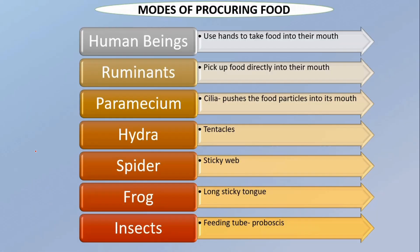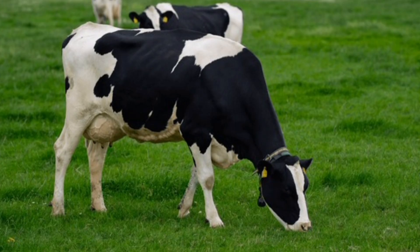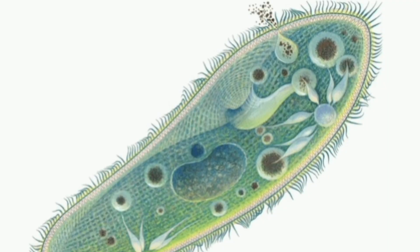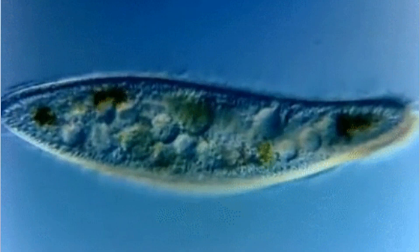Next is the mode of procuring food. Procuring food means the way we are ingesting the food. The mode of procuring food into a body varies in different organisms, each having special structures to procure food. Human beings use their hands to take food into the mouth. Ruminants, like cows and horses, pick up food directly into their mouth. Paramecium has fine hair-like structures called cilia all over its body, which push food particles into its mouth.